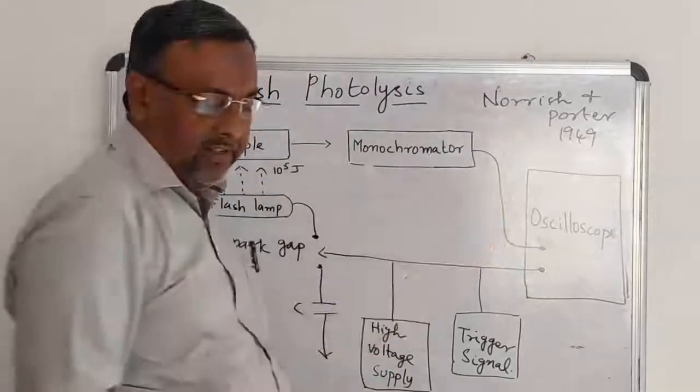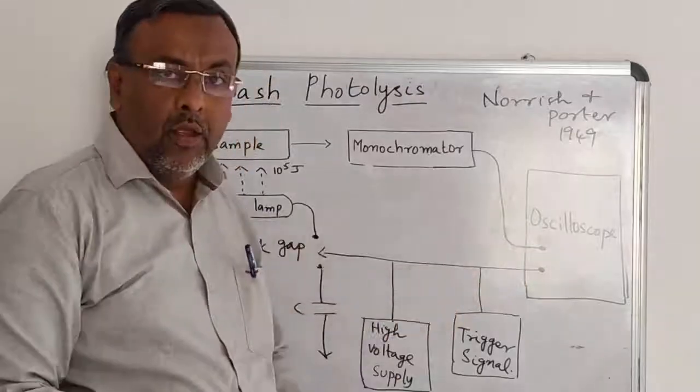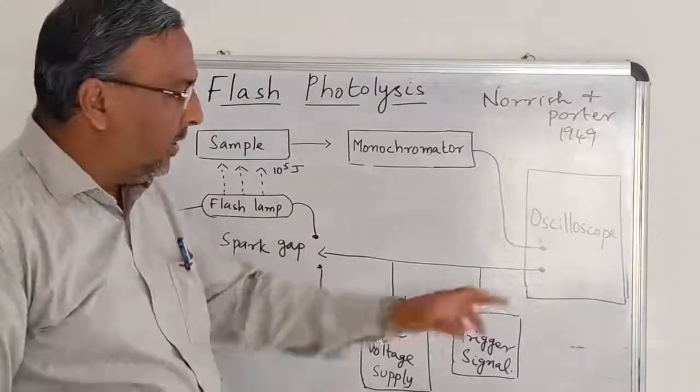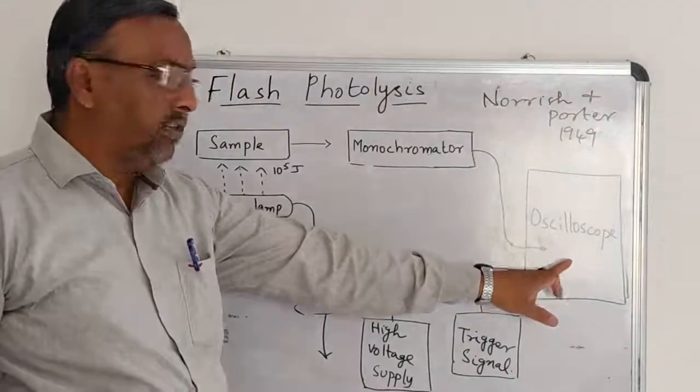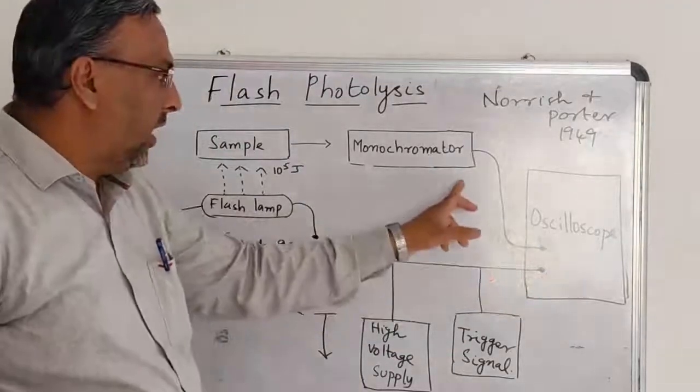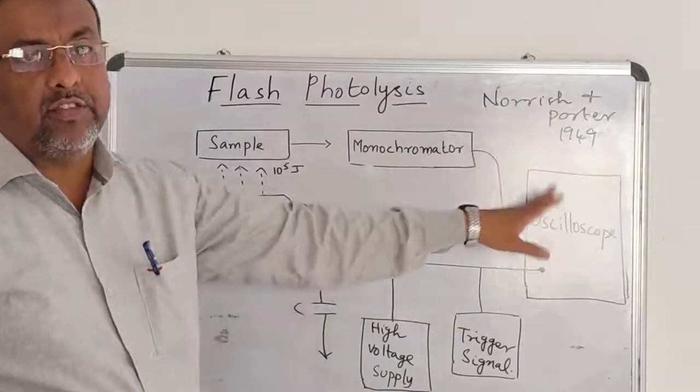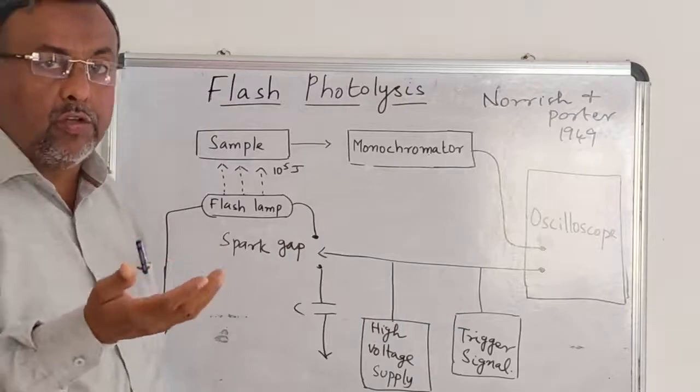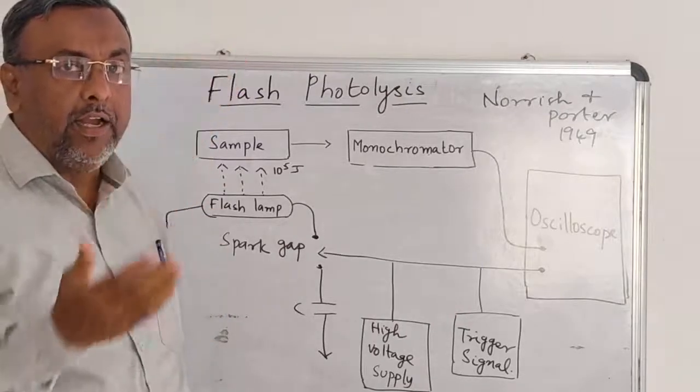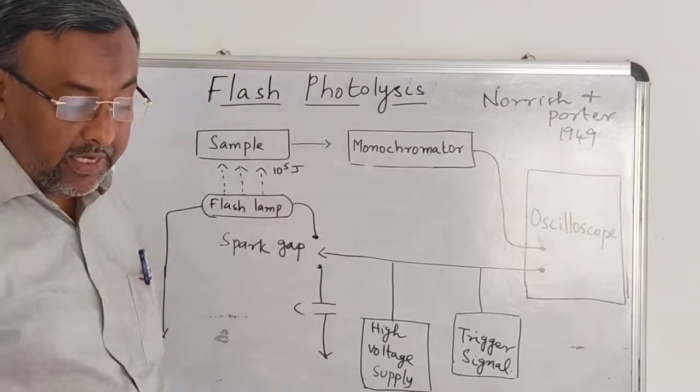When flash photolysis is followed as a function of time by absorption photometry, we are finding out the kinetic studies of this reaction or the concentration of the excited molecules. After excitation, it comes to the ground state, and the amount of radiation emitted.